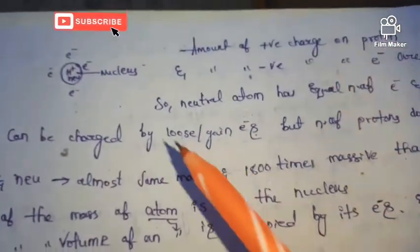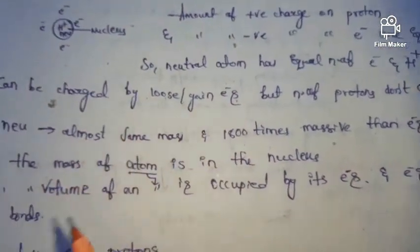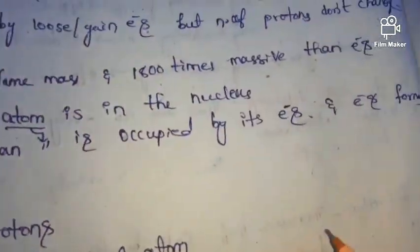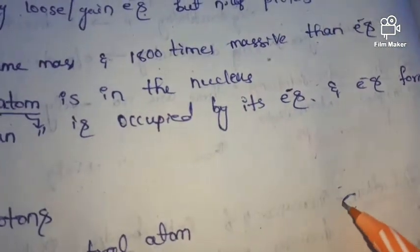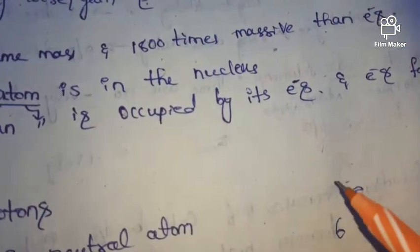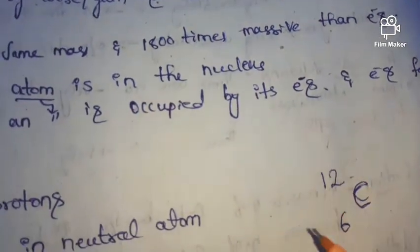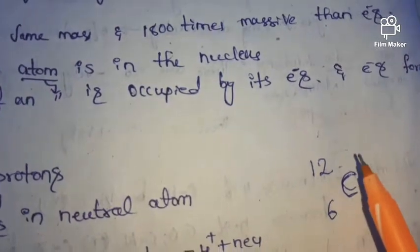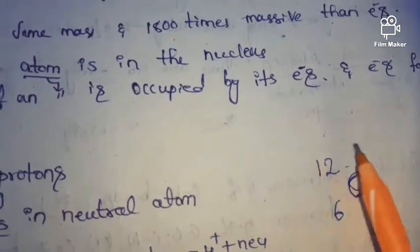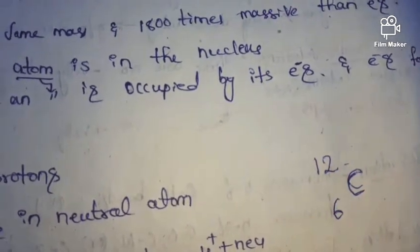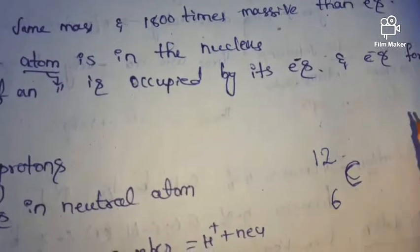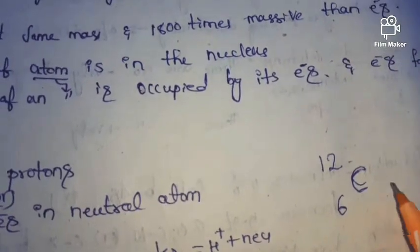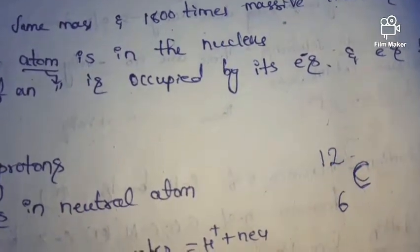First, we know that in a neutral atom, equal number of electrons and protons are present. For example, this is the carbon — this is the neutral atom. We can say this is a neutral atom because I did not mention any charge. So this is a neutral atom. In a neutral atom, the number of electrons and number of protons are the same. If the number of electrons are asked in this particular atom, we tell 6, and the same for protons also.